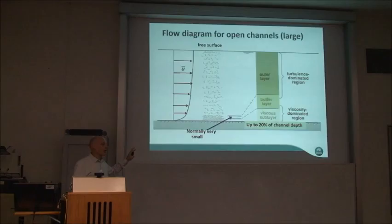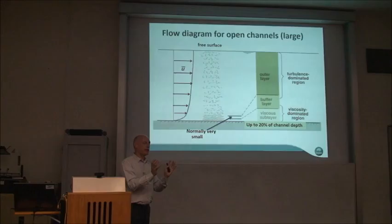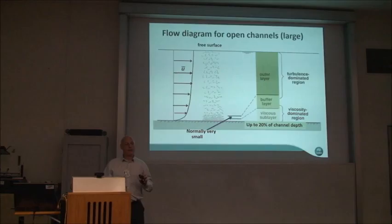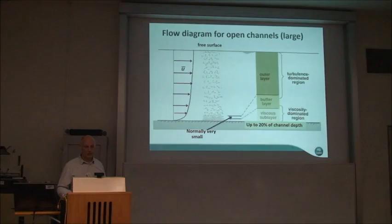When we go to smaller channels, we can't assume the edges don't matter — the edges are pretty well near the middle. So we get additional effects such as secondary flows, plus an additional wall providing an additional shear gradient across the channel. While we'd like to use the equations and models developed for channels over many years, they don't work so well, and we need to start again and look at what's happening in small channels.